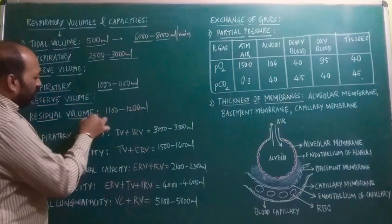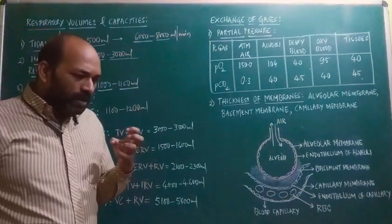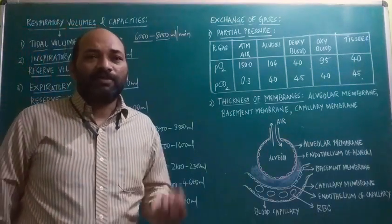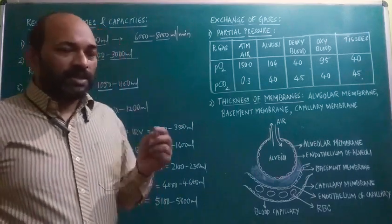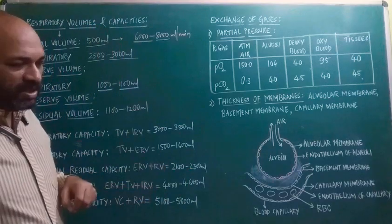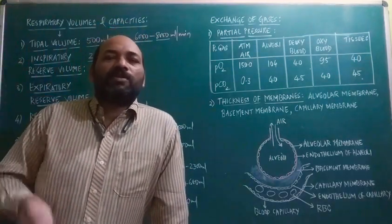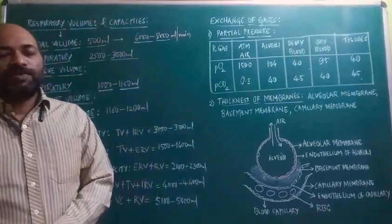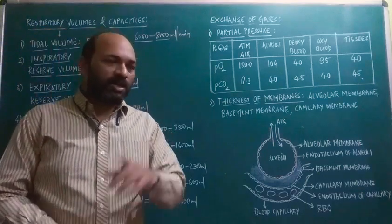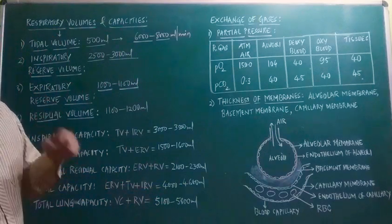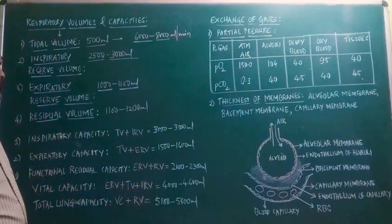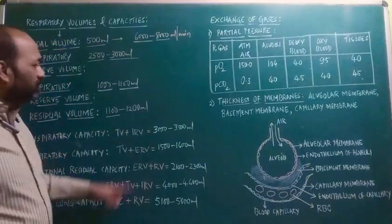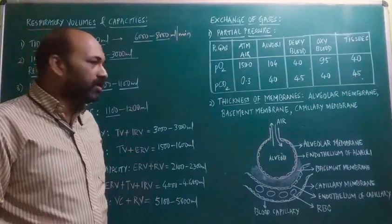The last volume is residual volume — the volume of air present in the lungs after forcible expiration. Whenever we try to breathe out excess air from our lungs, we will not die because there is a certain volume of air still remaining. The volume of air which retains in the lungs even after forcible expiration is residual volume, which is around 1,100 to 1,200 ml.